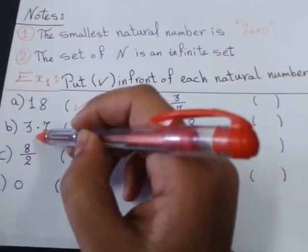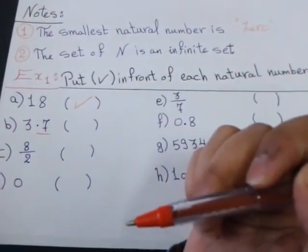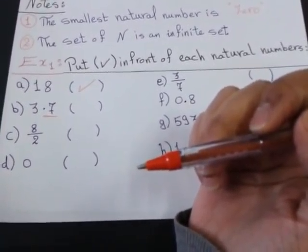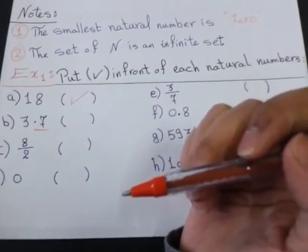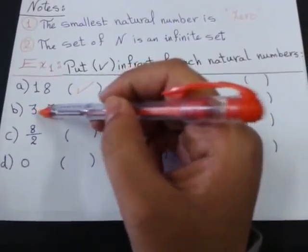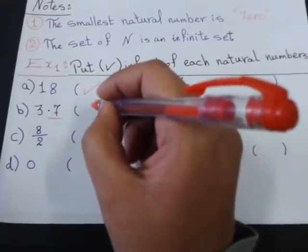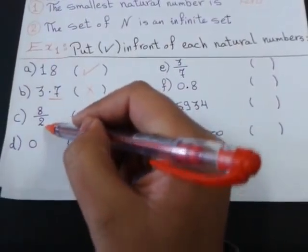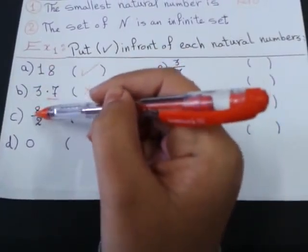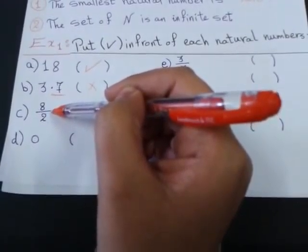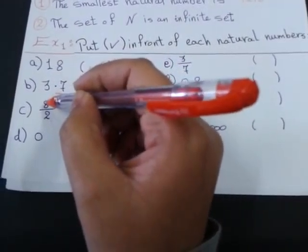3.7? No. When I'm counting the numbers, all the numbers I said are whole numbers, not decimal numbers or fraction numbers. So, 3.7 is a decimal number, so it's not a natural number. 8 over 2. As we know, over or the fraction bar is another sign of division.